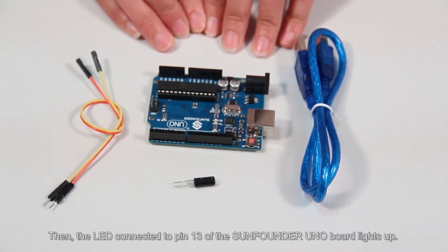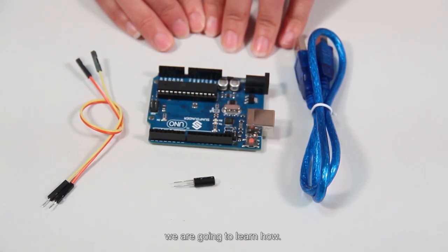Then the LED connected to pin 13 of the SunFounder UNO board lights up. Okay, knowing why, we're going to learn how. Let's build the circuit, which is extremely easy.